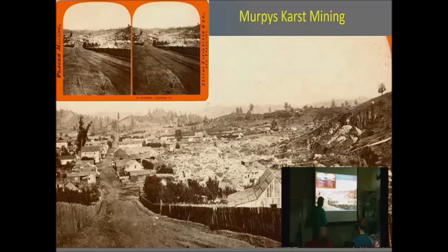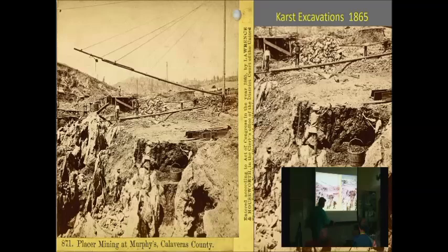Passing on from Columbia, here's a few of the other towns. This is the town of Murphys — they had a big karst mining area in there. Here you can see they're excavating down a fissure, putting all the dirt in buckets. Here's the miner filling this bucket, and you can see this big derrick — they'd swing the derrick down, pick up the bucket, and haul it over to their dump box over there.